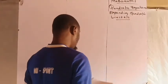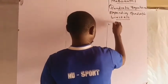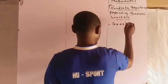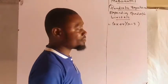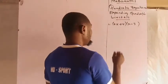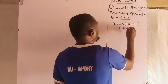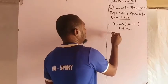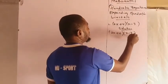Example one: expand (2x + 4) into (x − 3). Solution. We have 2x + 4 into x − 3.